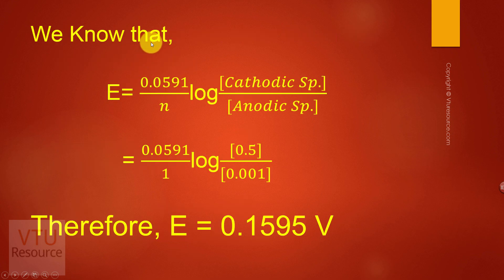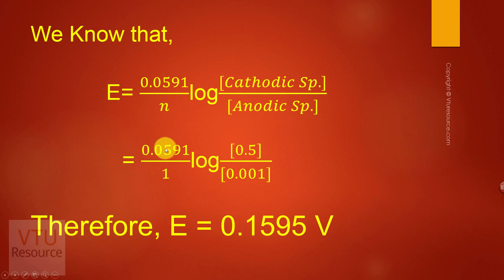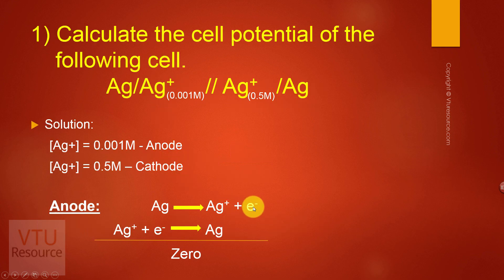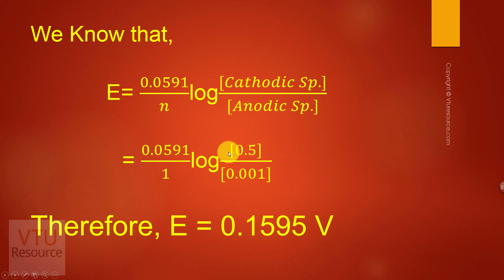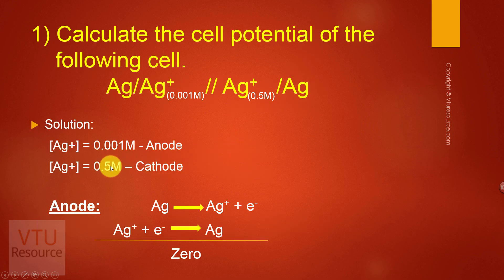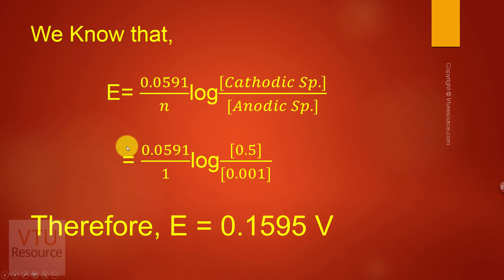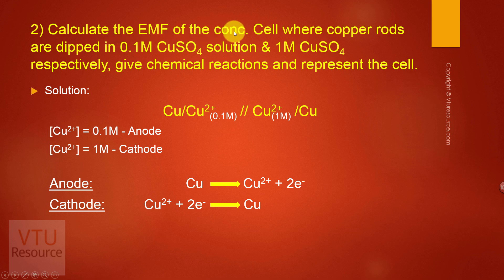The EMF of a concentration cell is given by E = 0.0591/n × log(cathodic concentration / anodic concentration). So E = 0.0591/1 × log(0.5 / 0.001). When we calculate this, we get EMF E = 0.1595 volts.